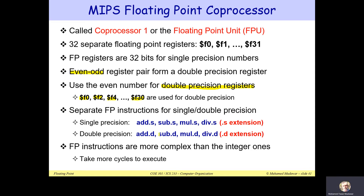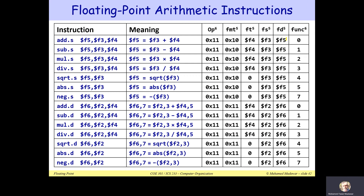There are separate instructions for single precision and double precision. For example, add.S means adding single precision floating point numbers, and add.D means adding double precision floating point numbers. These floating point instructions are more complex than the integer ALU instructions we have seen in previous lectures and occupy more area on the chip. This is why in the past it was called a coprocessor on a separate chip. In the 1990s, technology improved and they were able to integrate the coprocessor inside the same chip as a floating point unit.